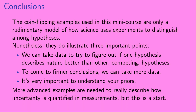These coin flipping examples are only a rudimentary model of how science uses experiments to distinguish among hypotheses, but they do illustrate three important points. First, we can take data to try to figure out if one hypothesis describes nature better than other competing hypotheses. Second, to come to firmer conclusions, we can take more data. And third, it's very important to understand your priors. More advanced examples are needed to really describe how uncertainty is quantified in measurements, but this is a start.